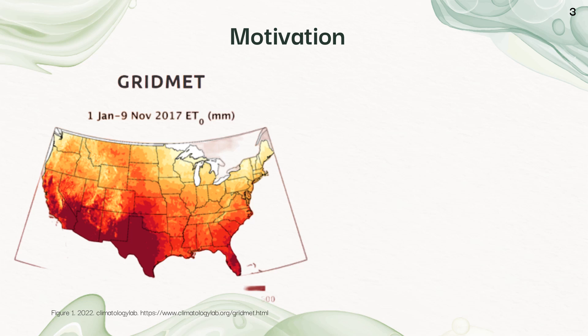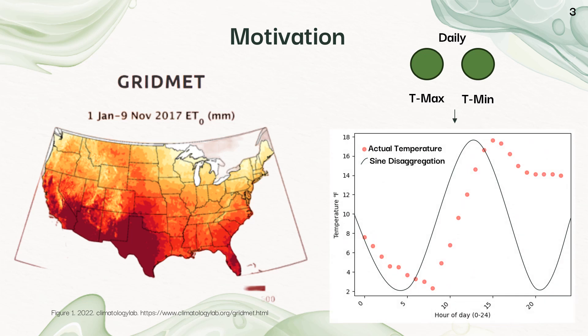And so if your model needs hourly temperature, like something dealing with heat exchange, like sunburn risk in apples, then you're going to have to disaggregate that out, and one of the traditional methods is to take the daily maximum temperature and the minimum and make up a sine curve.